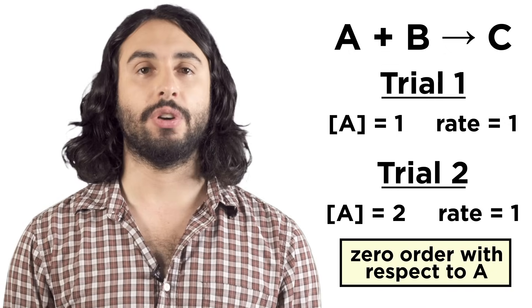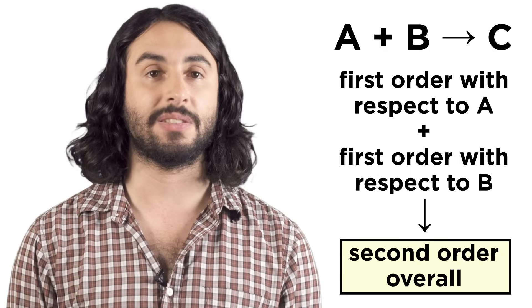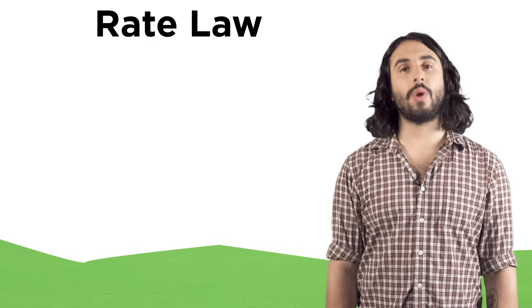The overall reaction order is just the sum of the orders from the individual reactants, so if a reaction is first order with respect to each of two reactants it would be second order overall.